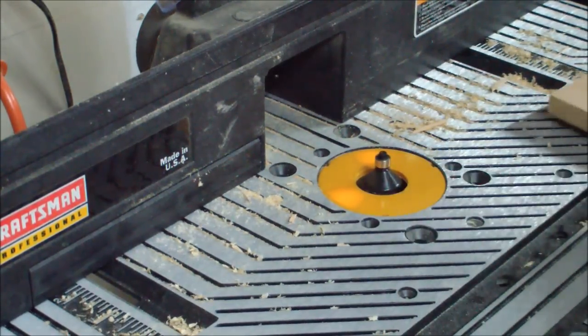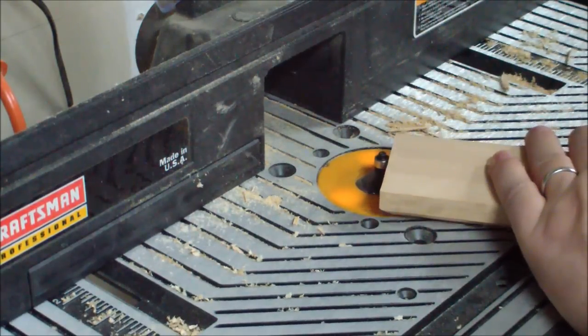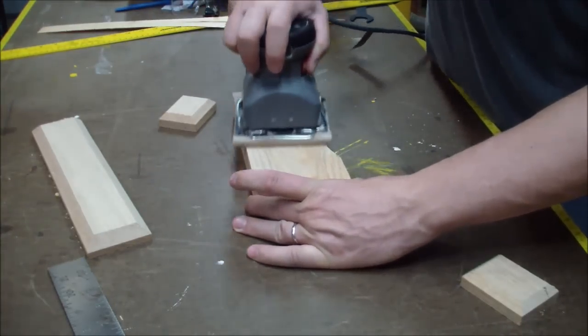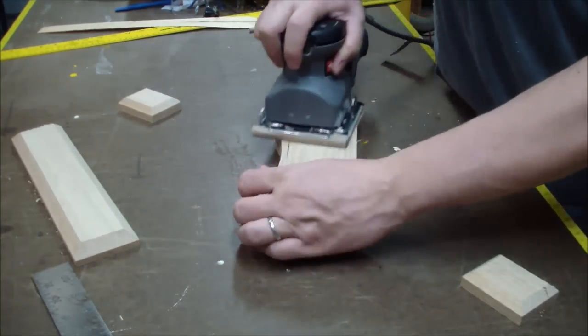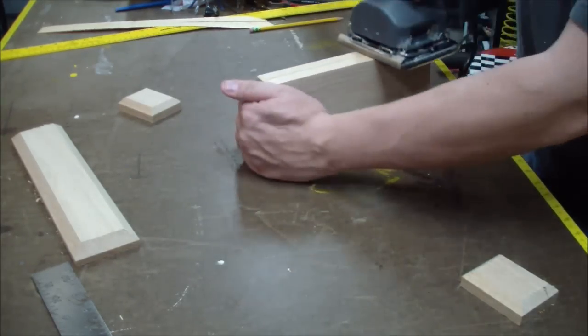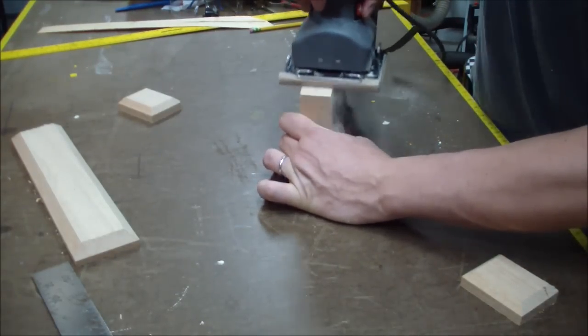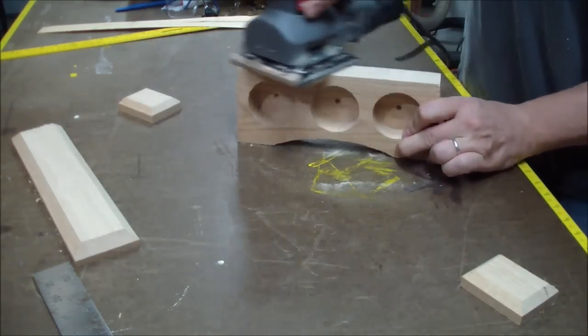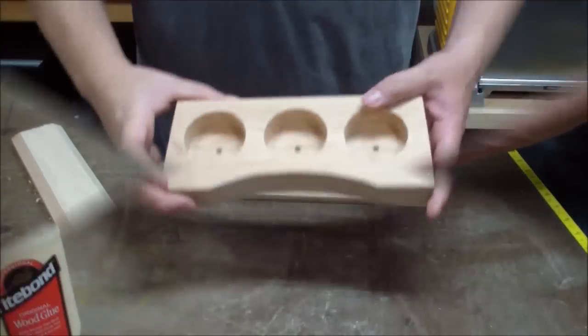When it came to sanding, I decided to go ahead and do that ahead of time before I did the assembly. I think it's just easier on smaller projects if you can get that out of the way. For what I did on this, I'm using oak boards here. I went through all the grits: a standard 60 grit, 100, and then 180.